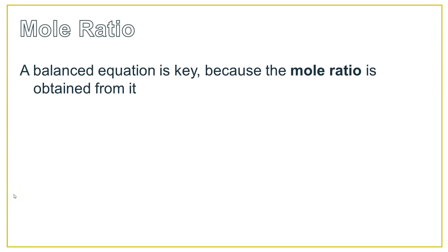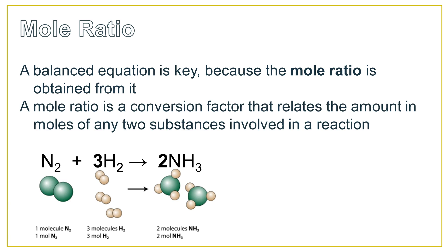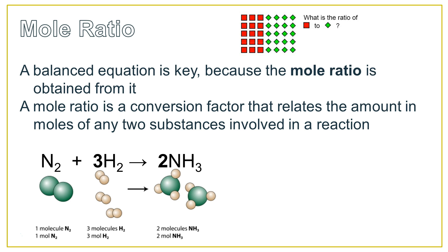A balanced equation is very important because I'm going to get the mole ratio from it. In this case, I am showing nitrogen plus hydrogen gas is going to make ammonia. The mole ratio allows me to convert from one to the other — it allows me to figure out the amount of one substance in relation to another substance.